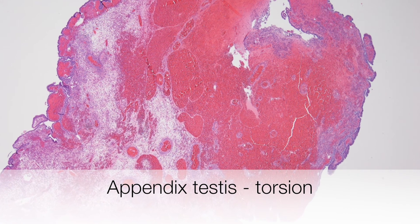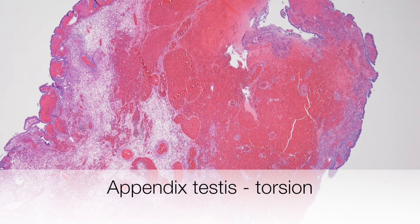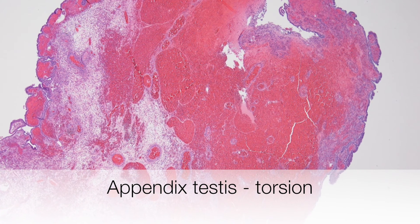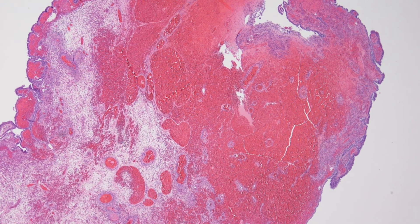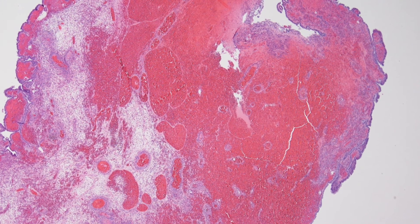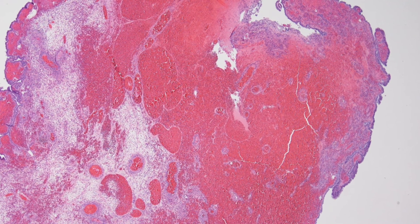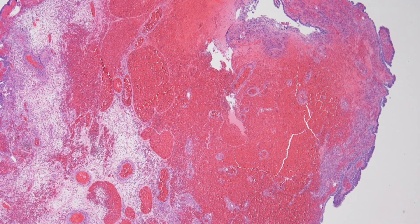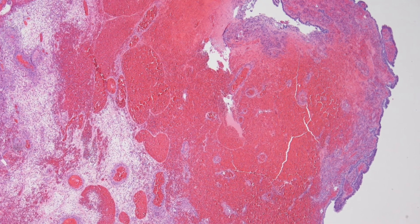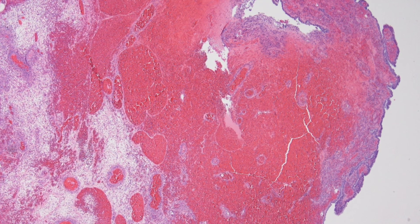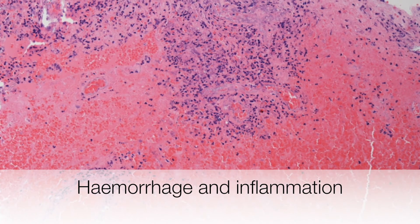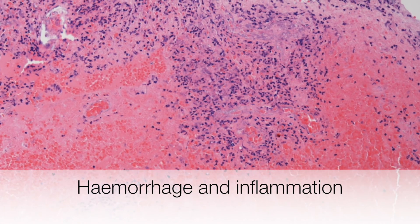The normal size of the appendix testis is 2–4 mm, but if it becomes twisted it can enlarge with congestion, oedema, and inflammation to a size of up to around 1 cm. Here you can see haemorrhagic infarction and acute inflammation.